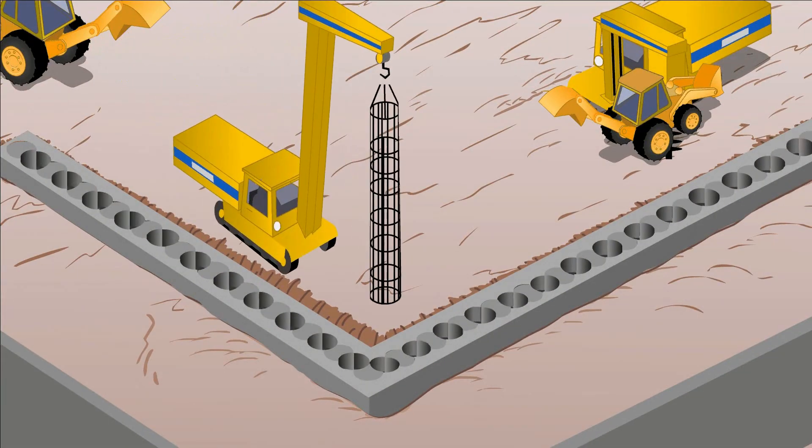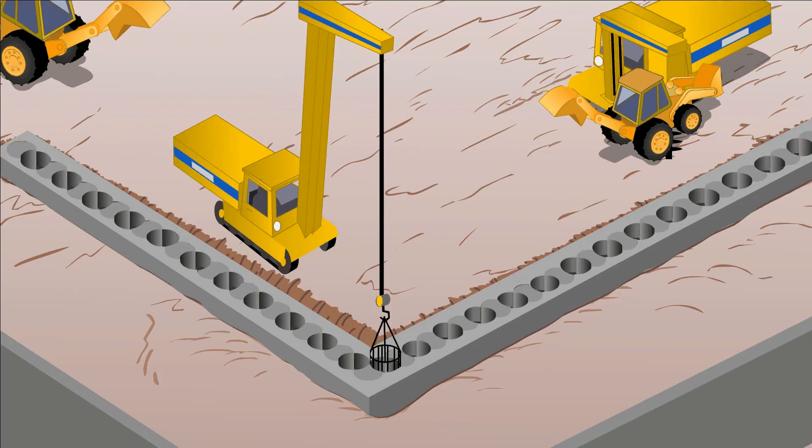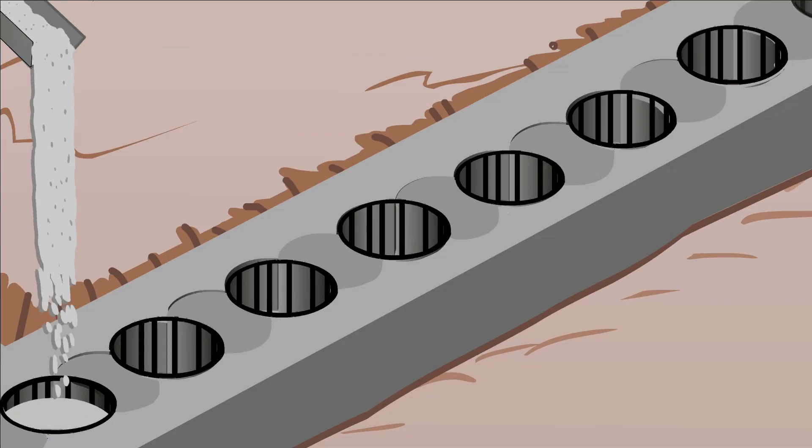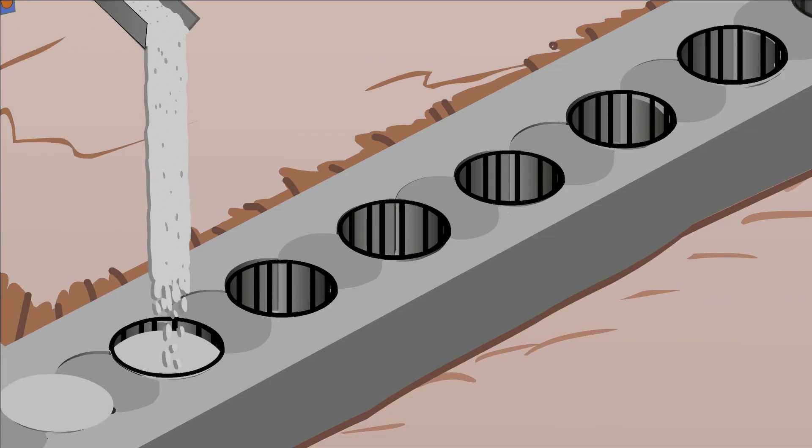For reinforcement, a prefabricated steel cage is lowered into each secondary pile. A second hard concrete mix is then used to complete the wall.